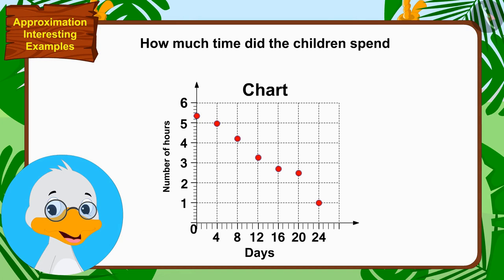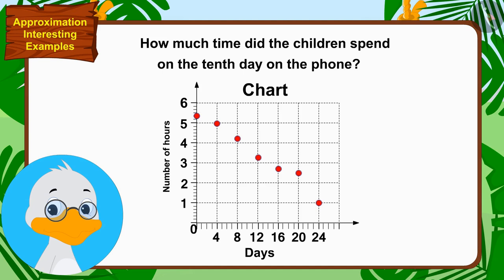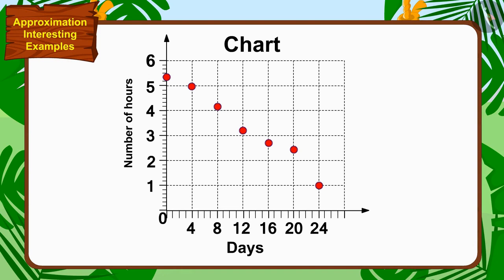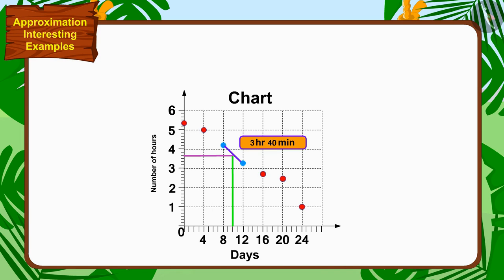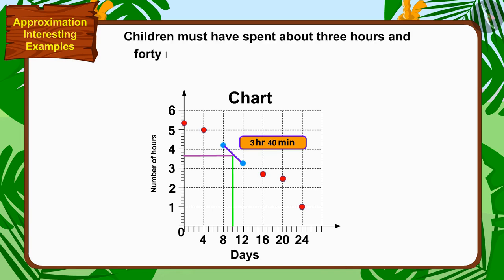Approximately, how much time did the children spend on the 10th day on the phone? Can you find an answer to this question, children? In this way, we can find a solution by connecting the dots of the 8th and 12th days in a straight line. The vertical line on the 10th day is meeting this line at this dot, indicating about 3 hours and 40 minutes. So, the children must have spent about 3 hours and 40 minutes on the 10th day on the phone.